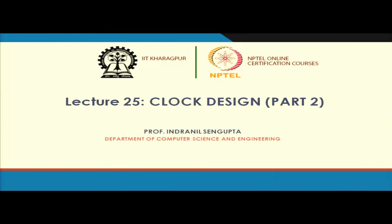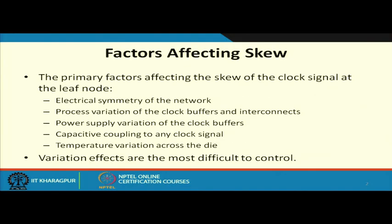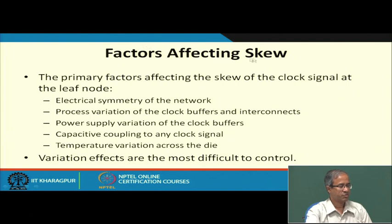Let us continue our discussion on clock design. If you recall in our last lecture we talked about some of the parameters like skew, jitter, setup time and hold time, and how they play a role in deciding the maximum clock cycle time during a pipeline kind of execution where there are storage stages with some logic circuitry in between. In this lecture we start by talking about the various factors that can affect the clock skew.